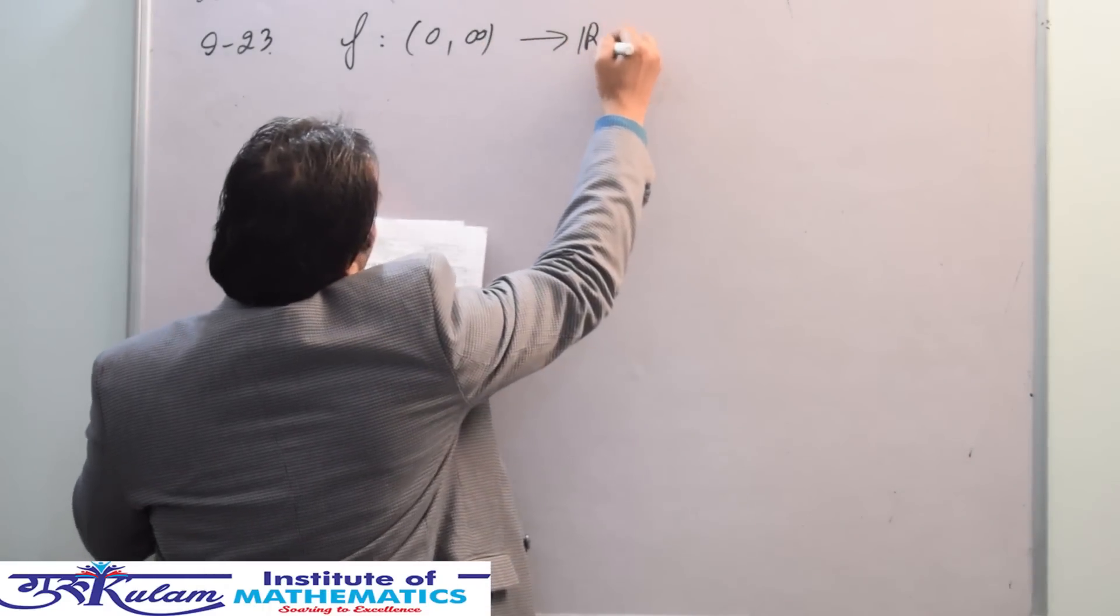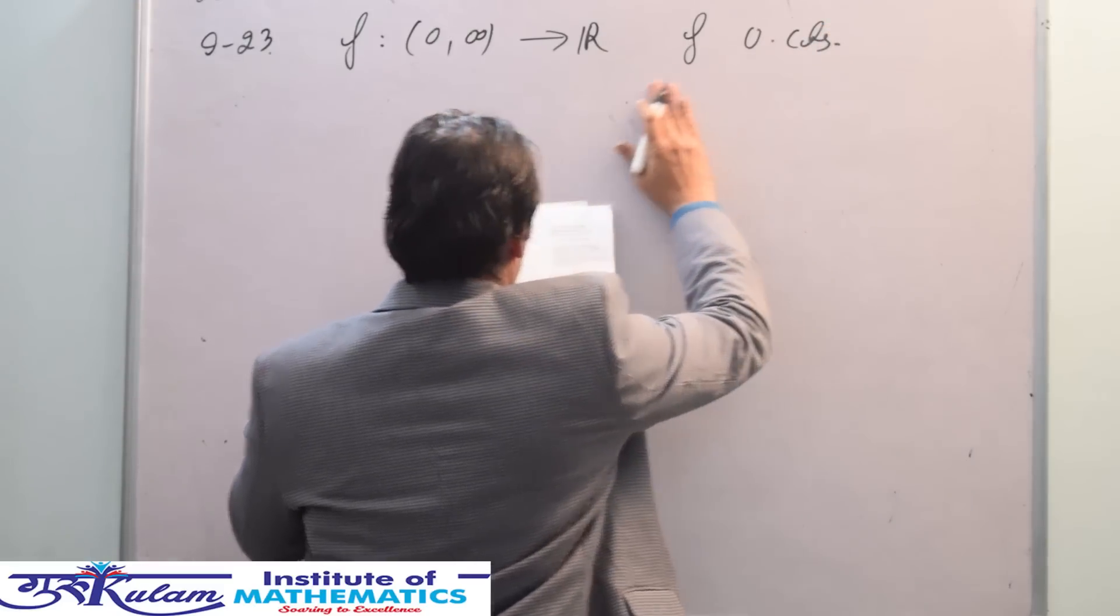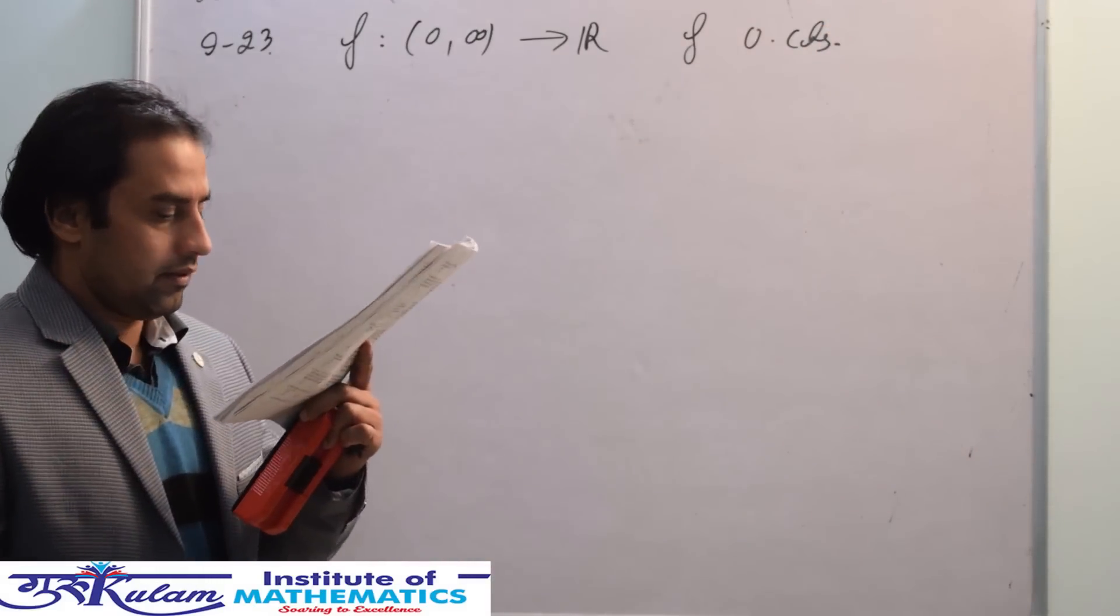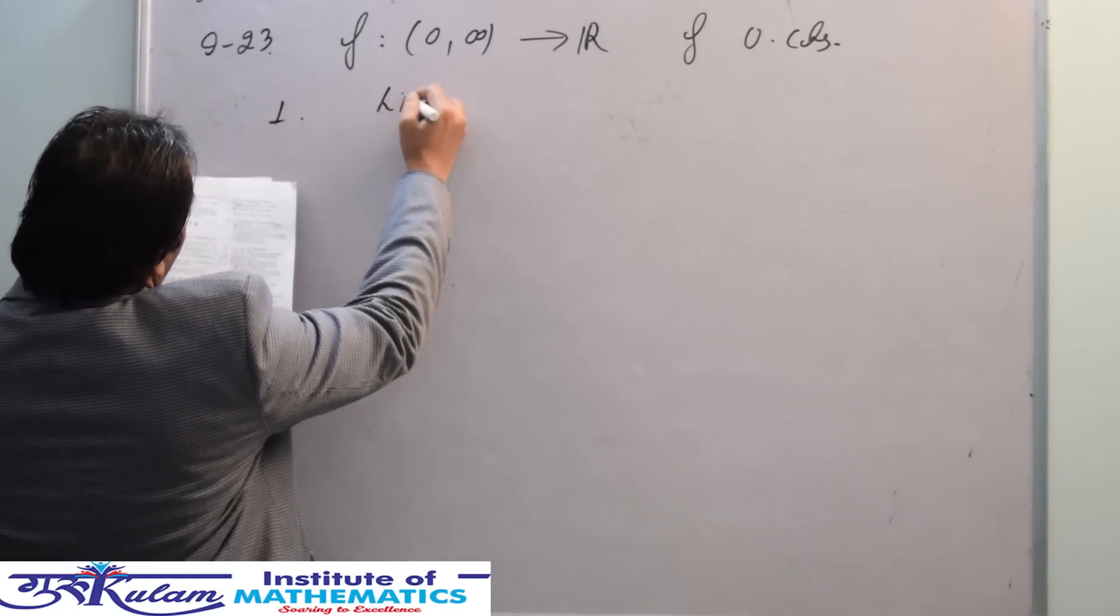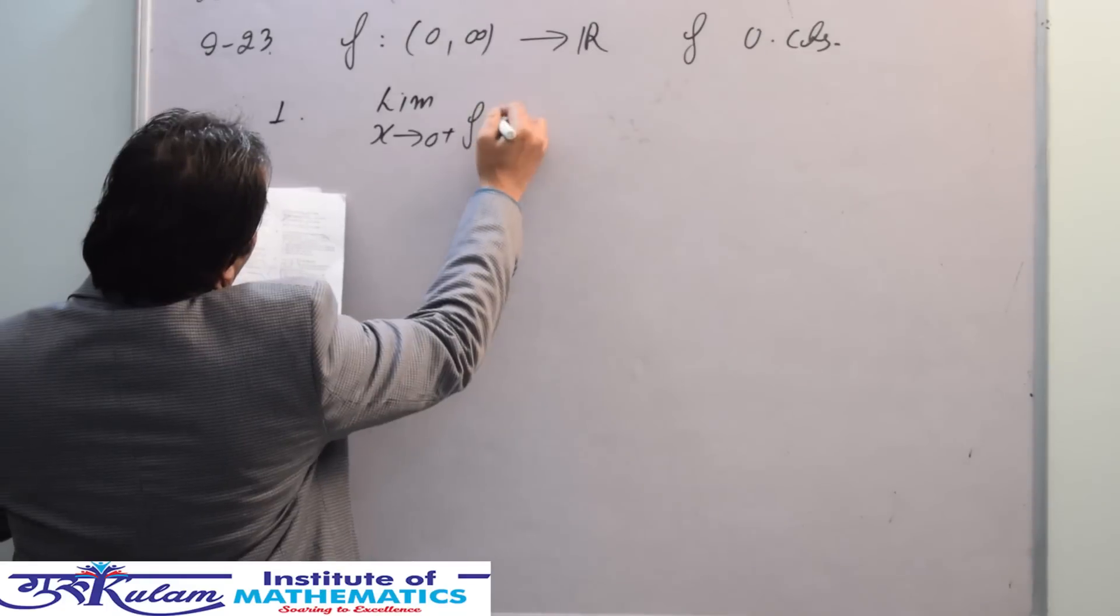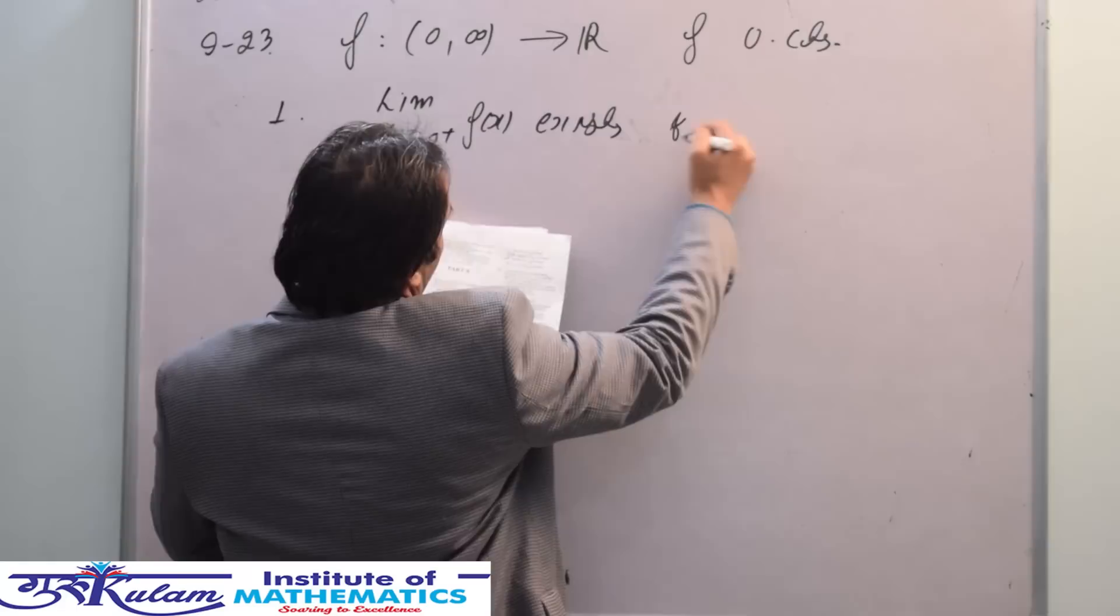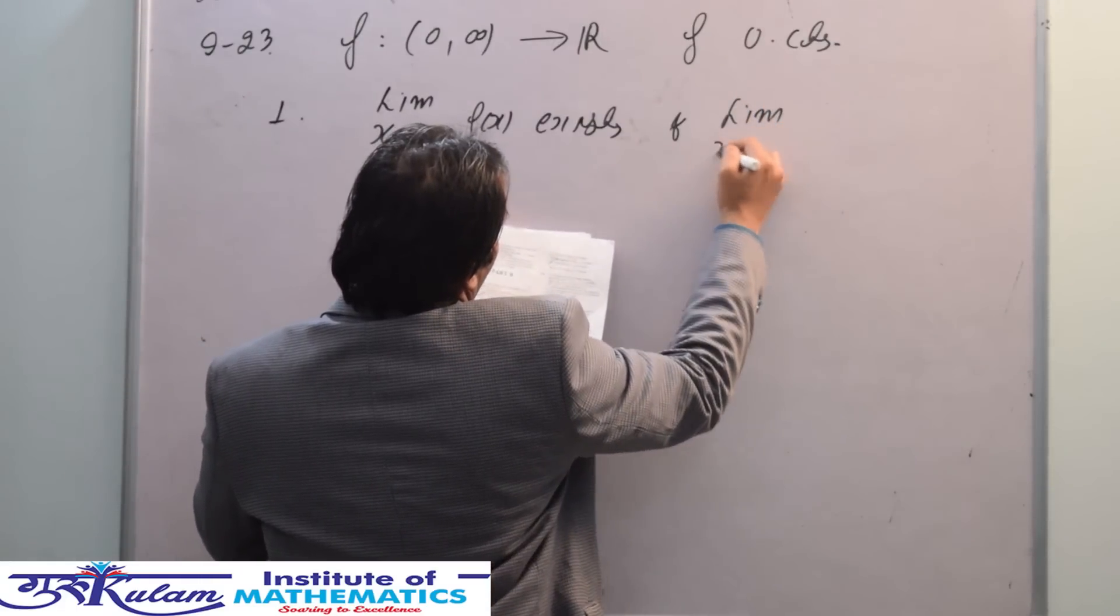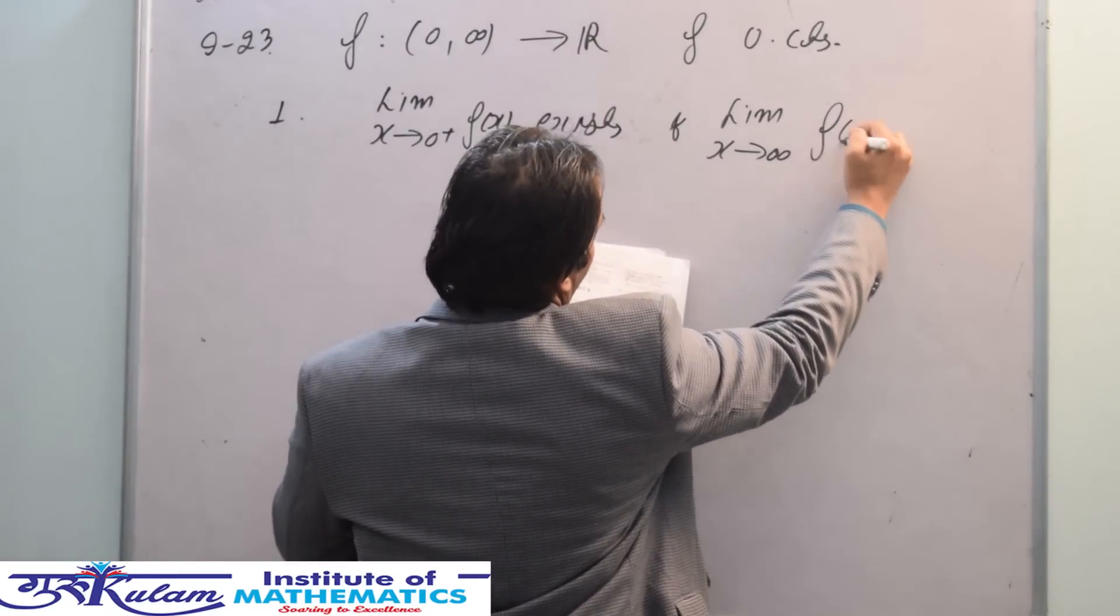Then the first statement or first option is: limit x tends to 0+ of f(x) exists, and limit x tends to infinity of f(x) exists.